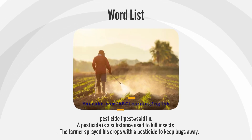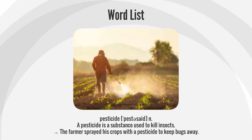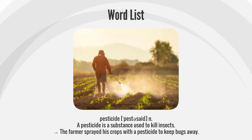Pesticide. A pesticide is a substance used to kill insects. The farmer sprayed his crops with a pesticide to keep bugs away.